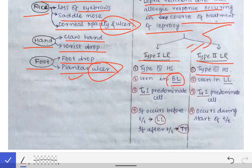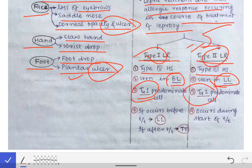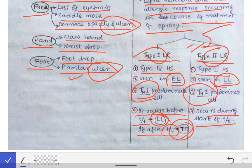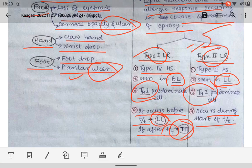Type 1 lepra reaction is seen in borderline leprosy, while Type 2 is seen in lepromatous leprosy. The predominant cell in Type 1 is the Th1 helper T cell, while in Type 2 it is the Th2 helper T cell. Type 2 lepra reaction occurs at the start of treatment, while Type 1 occurring before treatment leads to lepromatous leprosy, and after treatment leads to tuberculoid leprosy. Lab diagnosis of leprosy will be covered in the next video.